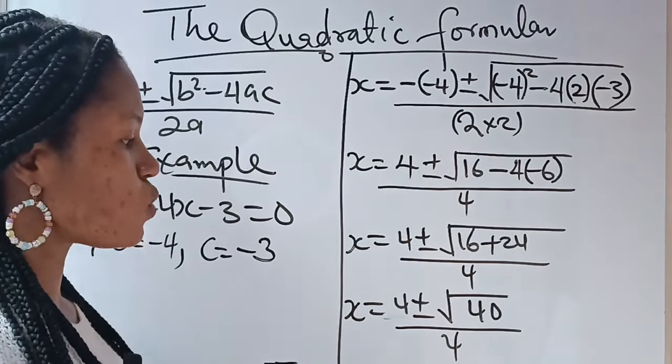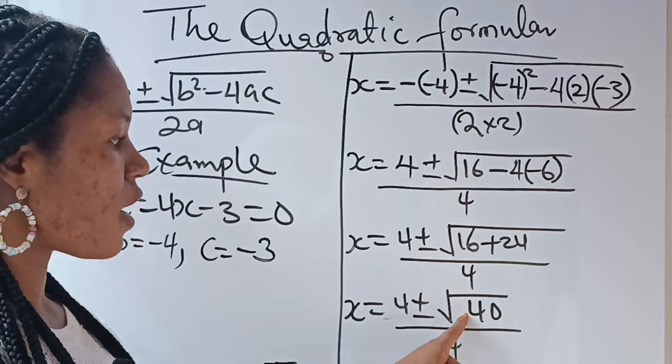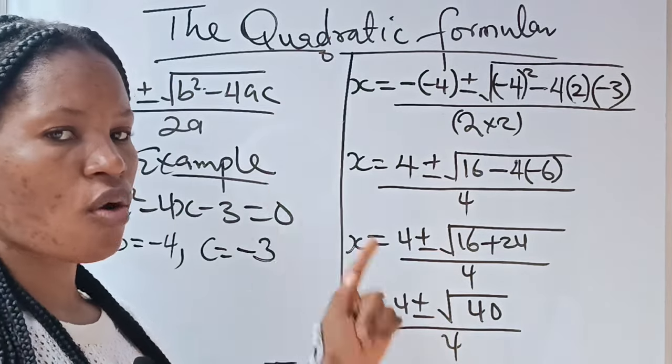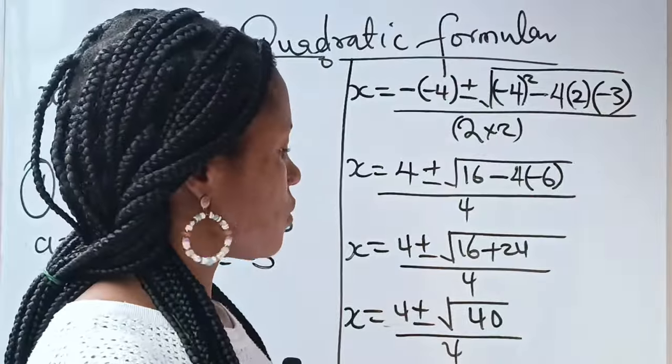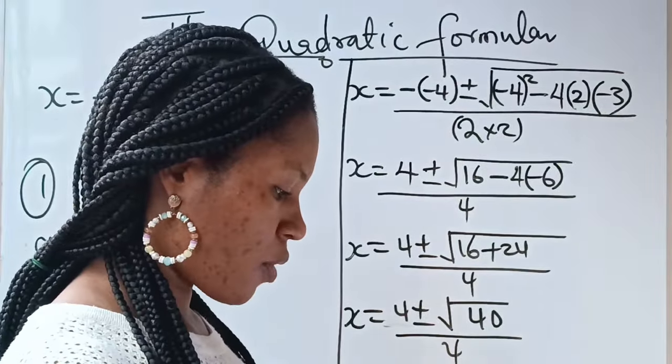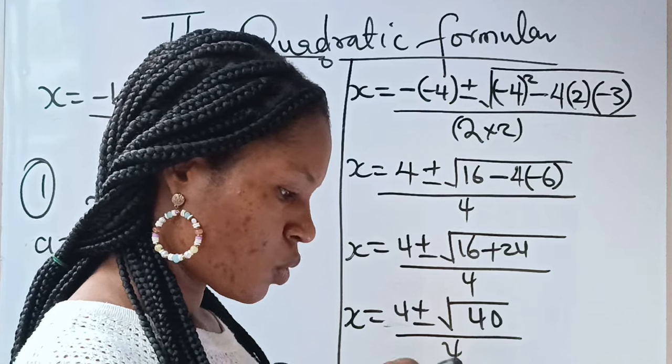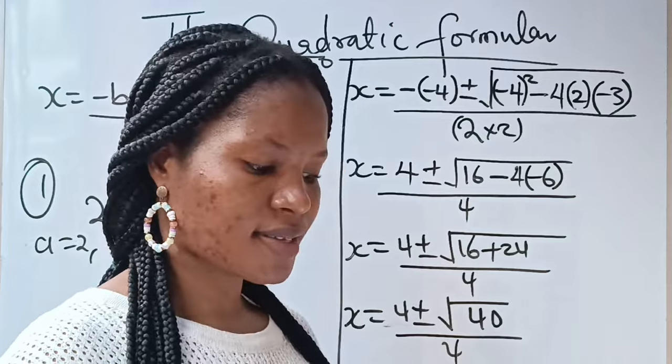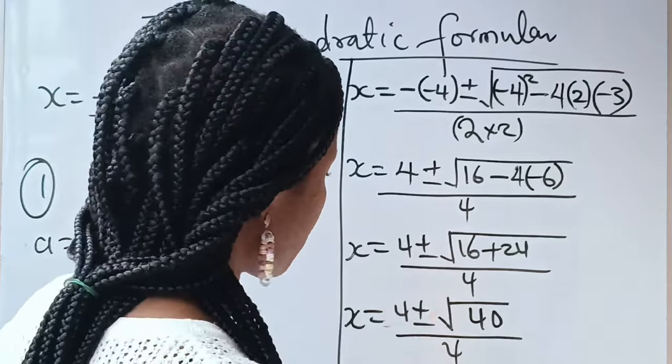Now, this is where you need to find the value of root 40. You need to find the value of root 40. Now, let me check. Square root of 40 will give you 6.3246. So, you are now going to have that your x...